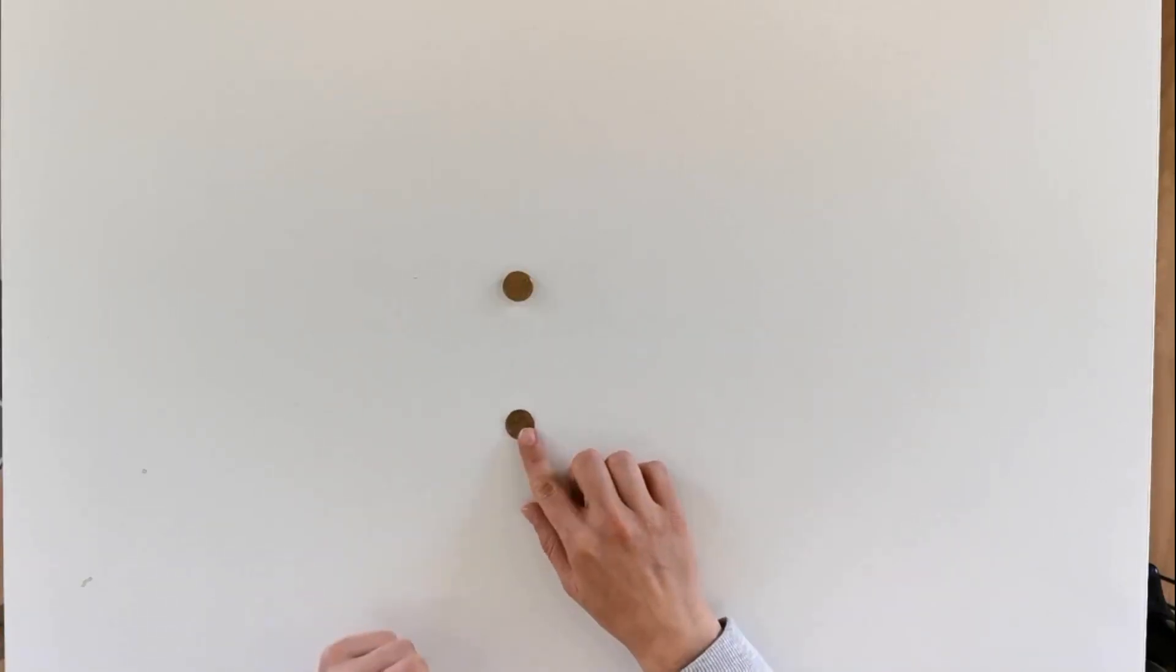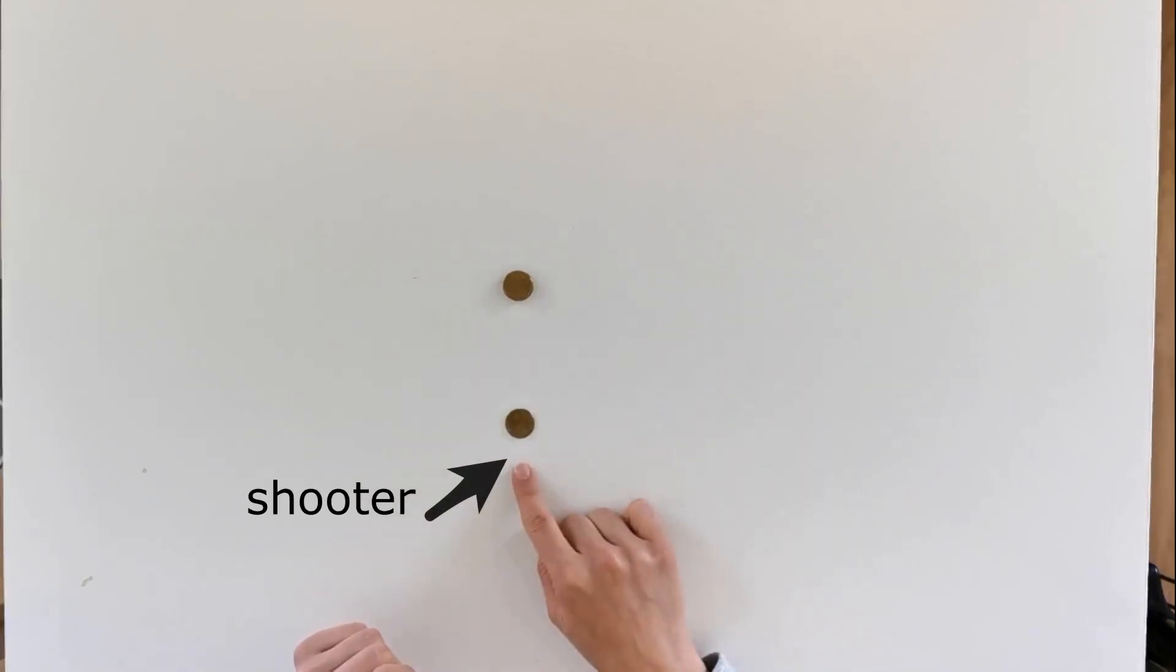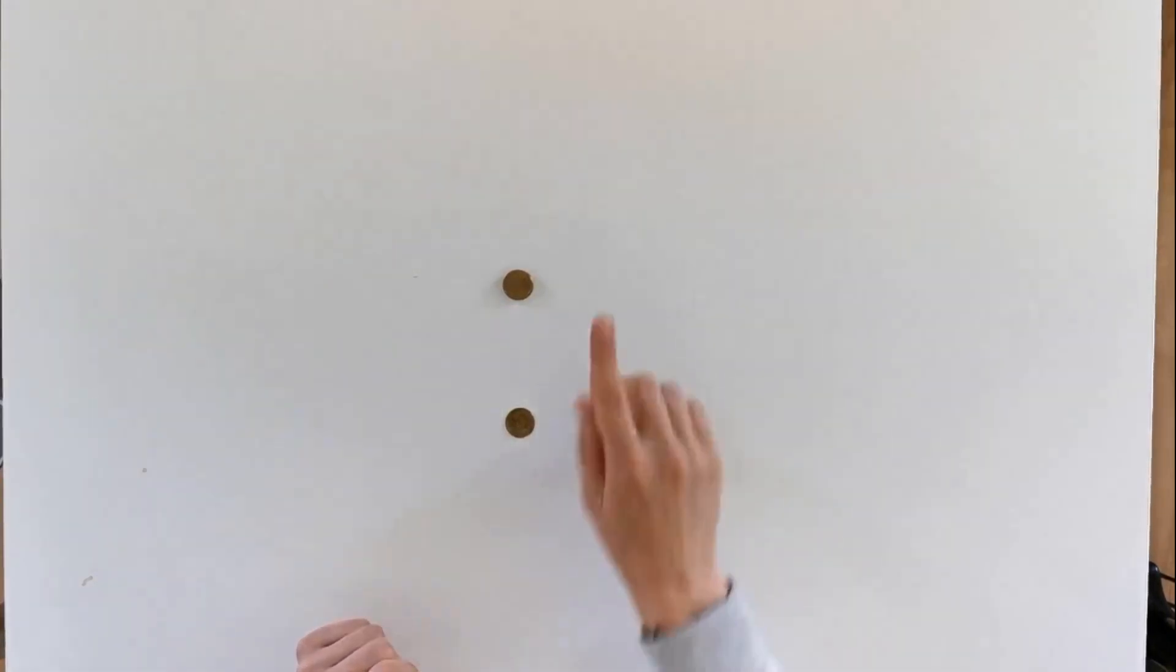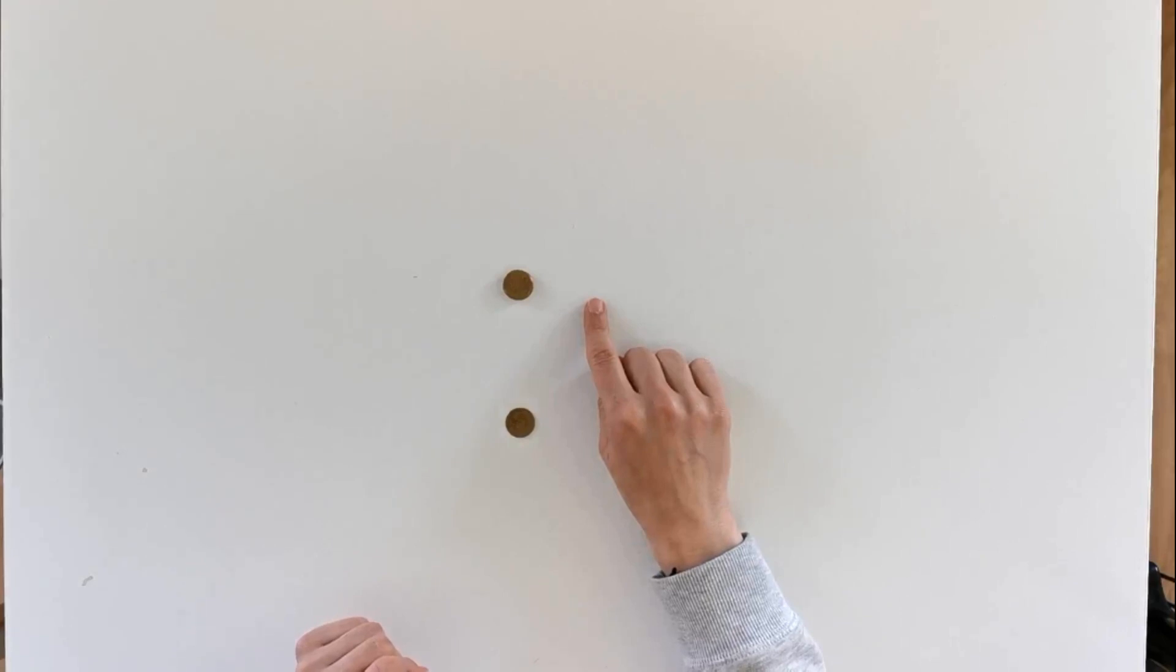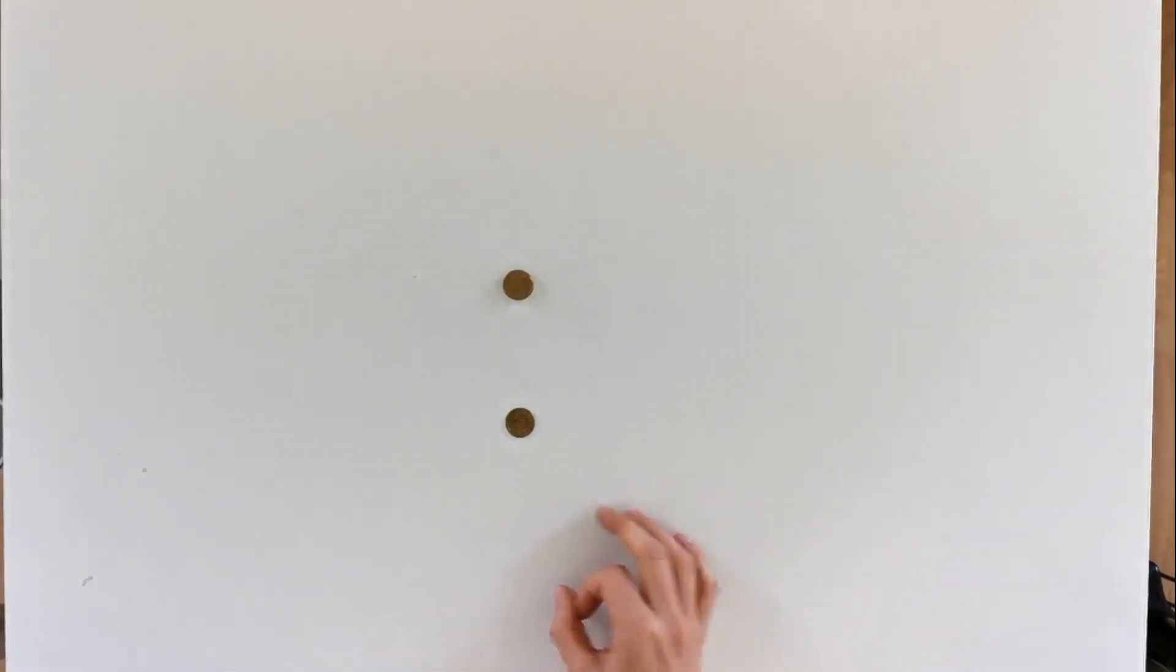Now this one will be a shooter. Okay, so here we have a tower of coins and here we have a shooter, and we're going to flick this one—this is a flick—toward this stack of coins, and it should be very strong. And then observe what is happening. So I'm going to do that now.